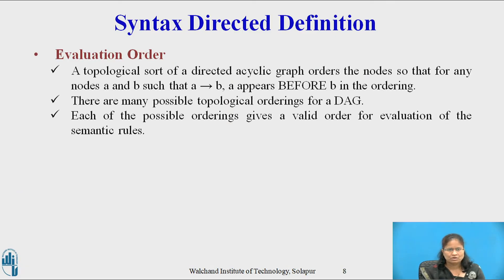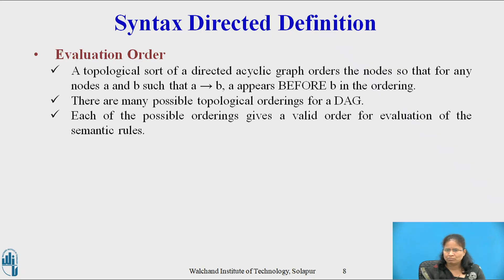Evaluation order. A topological sort of a directed acyclic graph is any ordering of the nodes of the graph such that for any nodes A and B, if A precedes B, then A appears before B in the ordering. There may be many possible topological orderings for a DAG. Any topological sort of a dependency graph gives a valid order in which the semantic rules associated with the nodes in a parse tree can be evaluated. In a topological sort, the dependent variables C1, C2, ..., CK in a semantic rule B = F(C1, C2, ..., CK) are available at a node before F is evaluated.